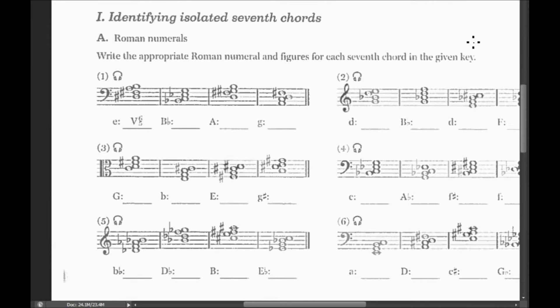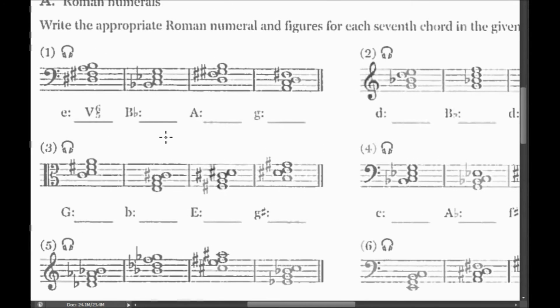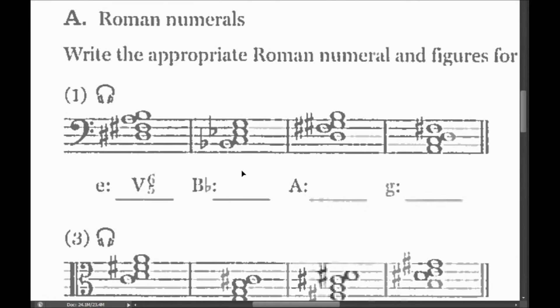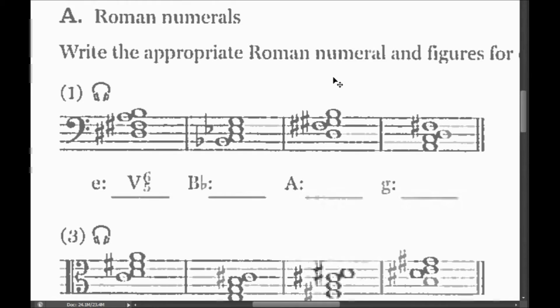Let's look at the next one. This one is identifying isolated sevenths. Let's take a look at the first example. Here you're given the chord and you're asked to label it with a numeral and the correct inversion. Don't forget that. Here's the process for it.